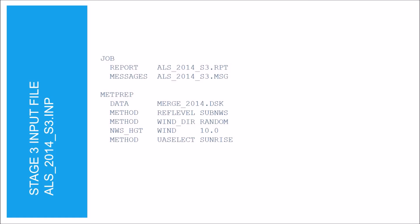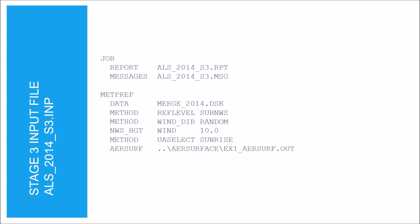The NWS_HDT keyword is used to specify the National Weather Service instrument height in meters for the specified variable. In this case, we specified that the wind data was measured at 10 meters. This parameter is mandatory if the REF LEVEL SUB NWS option is used. The AirSurf keyword specifies the file that contains the surface characteristics — we have the path and file name listed here. This file was generated by AirSurface, which is why we need to run AirSurface before we run AirMet.